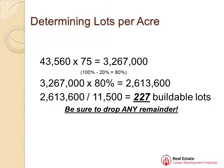You have 75 acres that he's developing, so multiply that out and you get your 3,267,000 square feet figure. Now remember, he's only developing 80% of that, so you've got to multiply 3,267,000 times 80% to get what square footage is buildable.